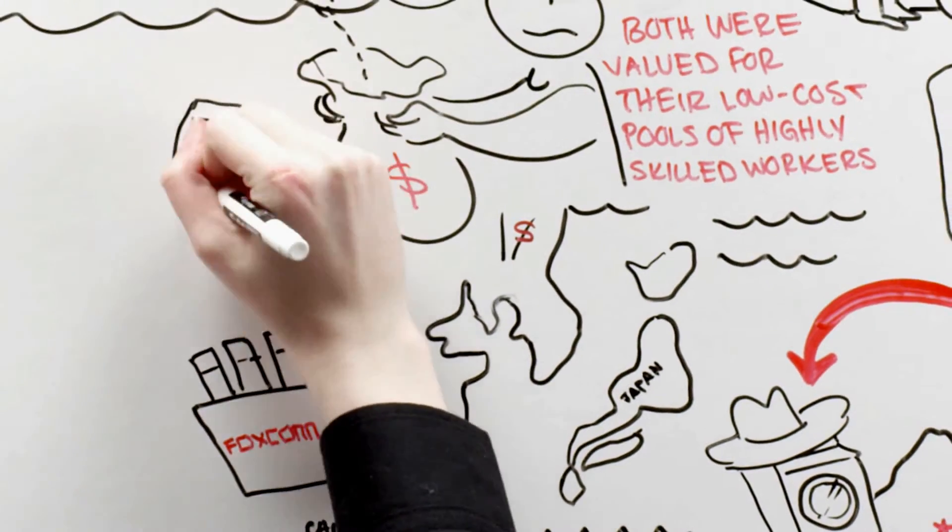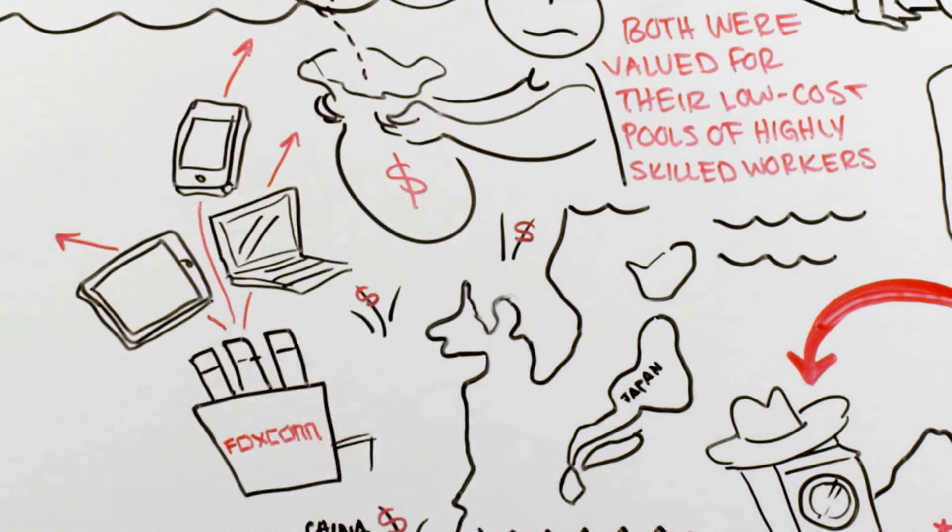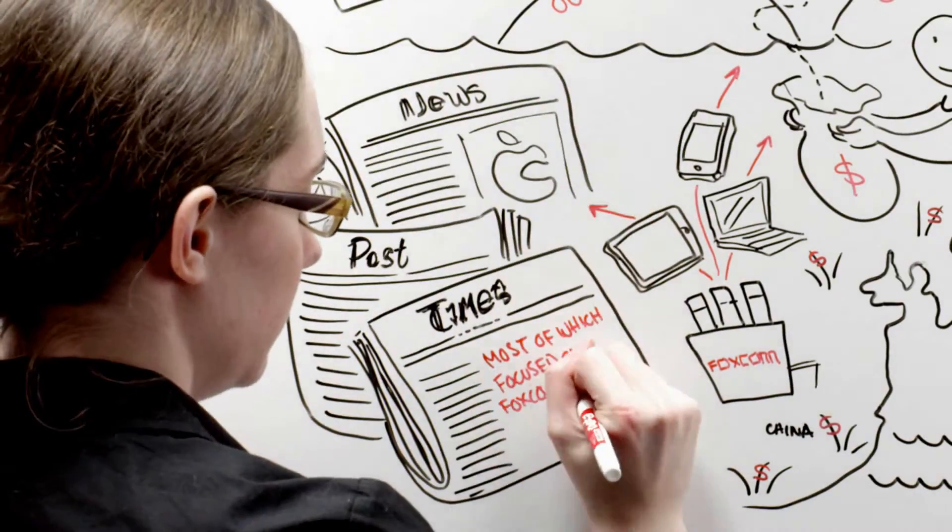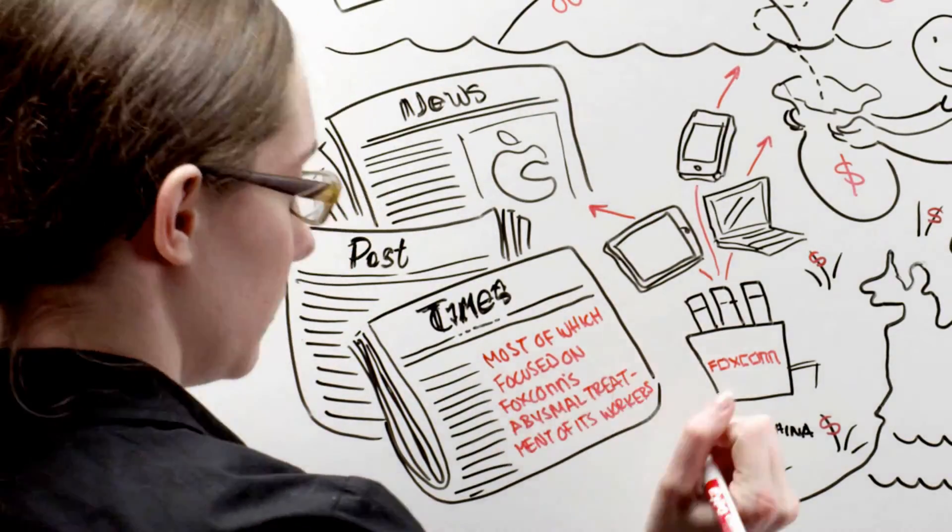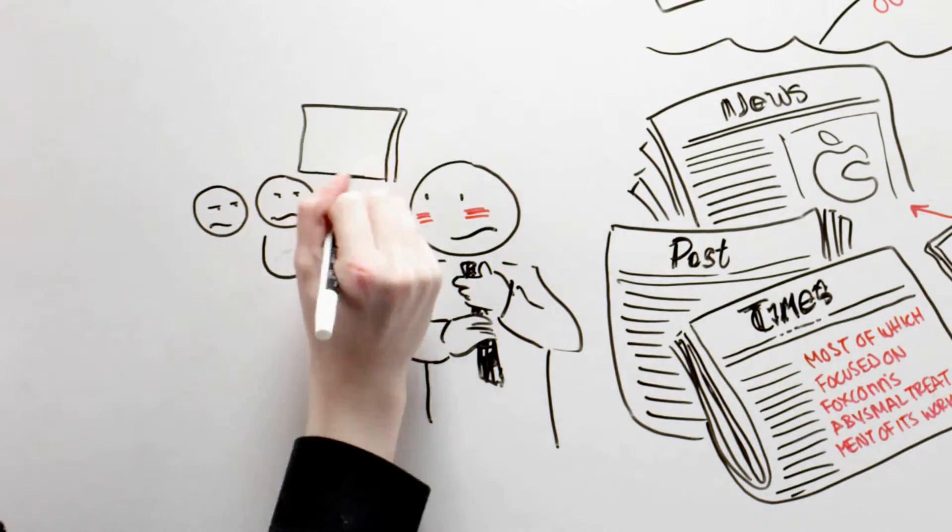Foxconn's enormous capacity to mass produce the iPhone and other Apple products was an advantage. But a series of widely publicized reports, most of which focused on Foxconn's abysmal treatment of its workers, outraged many Americans, embarrassed Apple officials, and damaged the company's brand.